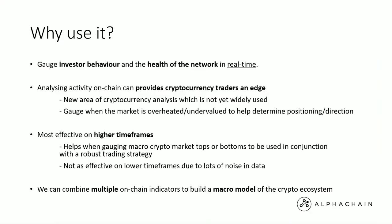So why should we use on-chain analysis? It helps us gauge investor behavior and the health of the network in real time. Unlike equity markets where you have quarterly reports — and don't really know what's going on with the business in between — with on-chain analysis we can look at exactly what's happening at any given moment, whether hourly, daily, or weekly. That gives us an edge because we can see actively if fees are going up on the Ethereum blockchain, if more or fewer people are paying fees, and if more or fewer wallets are being opened — all giving us indication on the health of the market and what might be happening with price.